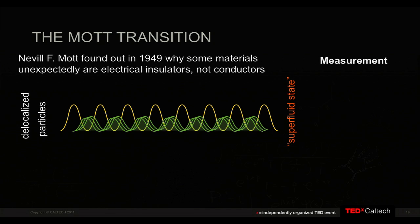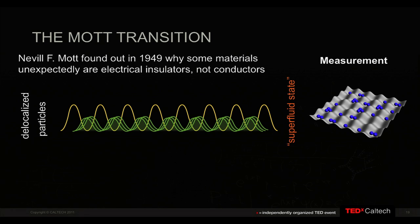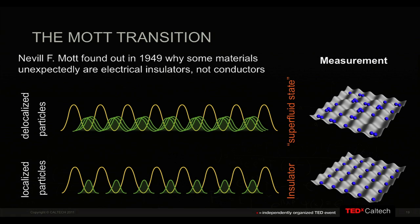Neville Mott, 60 years ago, looked at a similar problem: they had found a class of materials that they thought should be conductors but were in fact insulators. Mott was able to solve the formula for that case — which looks almost exactly the same as the one you saw — and found that in that case the atoms are actually all localized on a single lattice site. Due to interactions between the electrons, each site is filled with exactly one particle. So in our simulator, the atoms will all be localized to a single site, and when we make the measurement we'll see a nice, full lattice filled with a single atom per site.